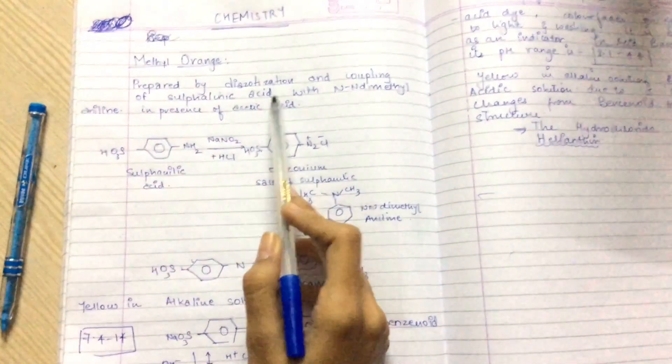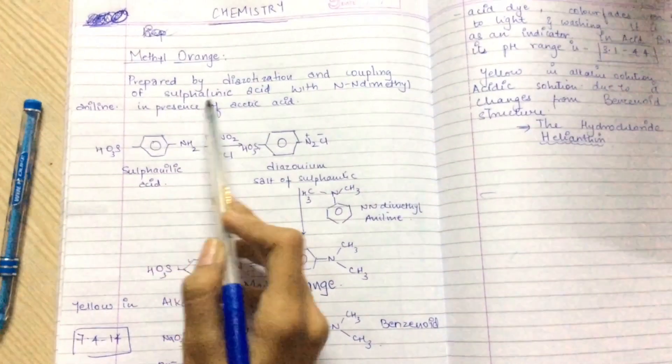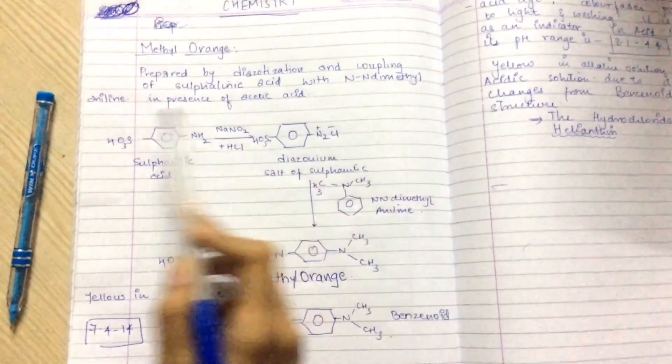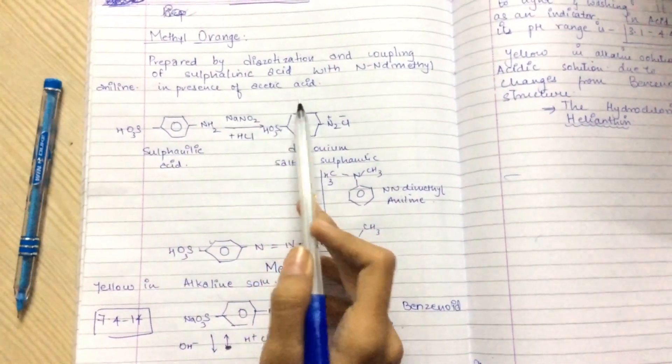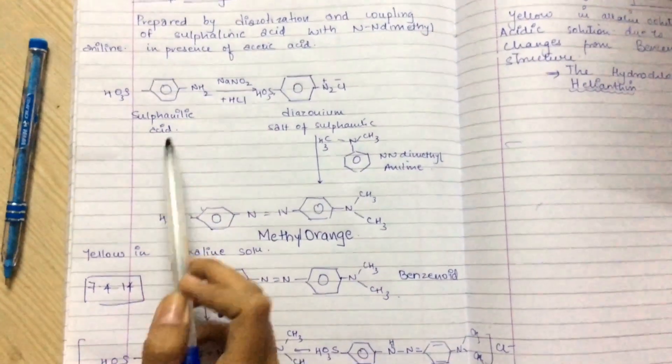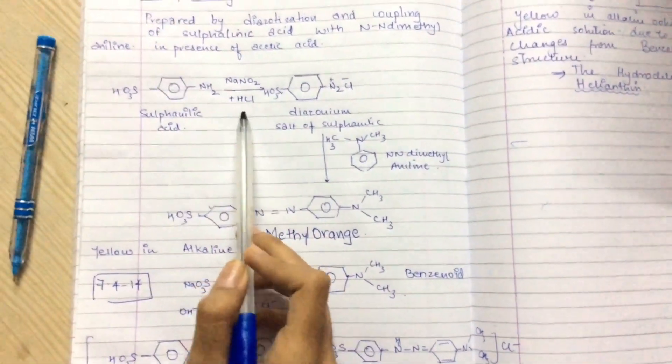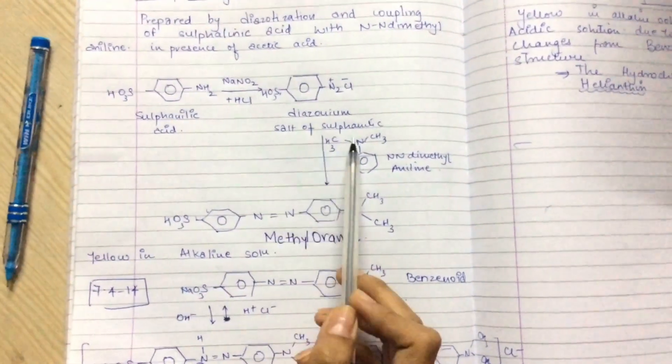Methyl orange is prepared by diazotization and coupling of sulfanilic acid with N,N-dimethylaniline in presence of acetic acid. Sulfanilic acid reacts with NaNO2 plus HCl to give diazonium salt of sulfanilic acid.